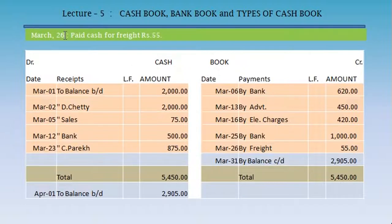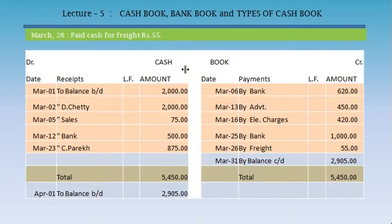March 26: paid cash for freight, Rs. 55. We have foregone our cash by Rs. 55 towards payment of freight, so we record it on the cash book credit side: March 26, by freight, Rs. 55.